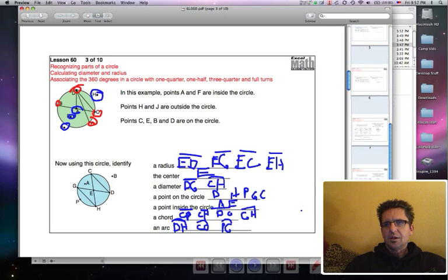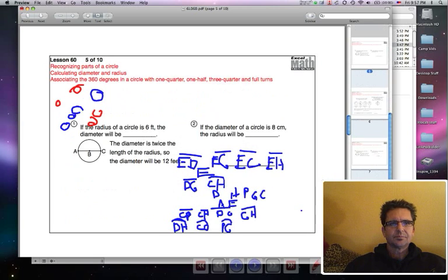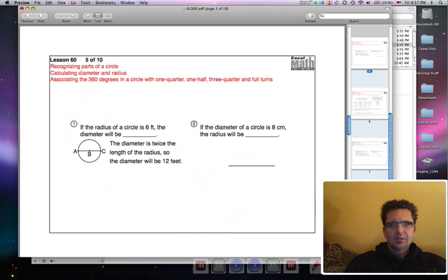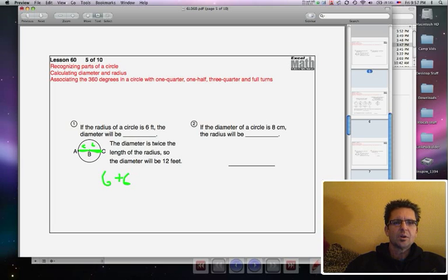Now let's go to the next one here. It says, if the radius of a circle is six feet, the diameter will be, well, the radius is halfway across the circle. And so if the radius is six, then that means the other half is six. And six plus six makes 12. So the diameter is 12 feet.